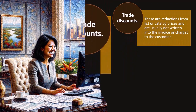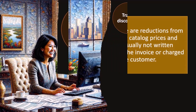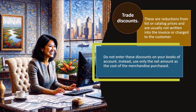Trade discounts are discounts from the list or catalog prices and are usually not written into the invoice or charged to the customer. Do not enter these discounts on your books of account; instead, use only the net amount as the cost of the merchandise purchased. This is a different type of discount from cash discounts. Cash discounts are typically because you paid cash, whereas a trade discount would be reflected in the cost of the merchandise you're purchasing.